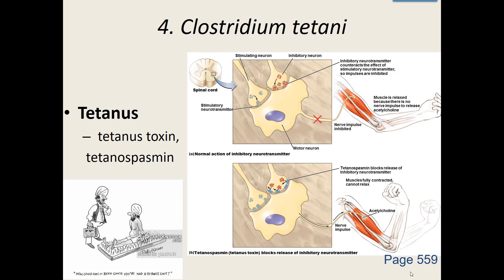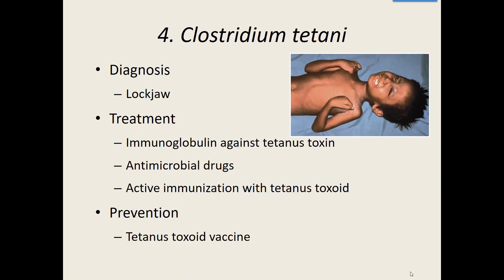Diagnosing: generally the first muscles affected are in the face, causing what we call lockjaw — the muscles in your face stay in a continually contracted state and you literally can't open your mouth. Treatment usually involves binding up that toxin — they give you antibodies against the tetanus toxin, try to give you antibiotics to kill the bacteria in the body, and may also do an active immunization to stimulate the body to make its own antibodies faster.